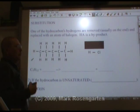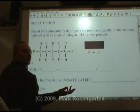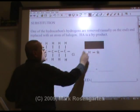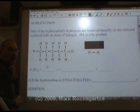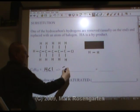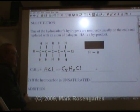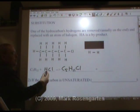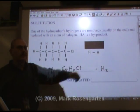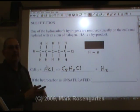What if instead of reacting with Cl2, we reacted with hydrogen chloride, HCl? The same thing will happen — the chlorine will come over and replace the end hydrogen. We'll get C5H11, and the chlorine will come in and take the hydrogen's place. The hydrogen that was removed will bond with the other hydrogen to form H2. So that's substitution, where you substitute one atom for another.